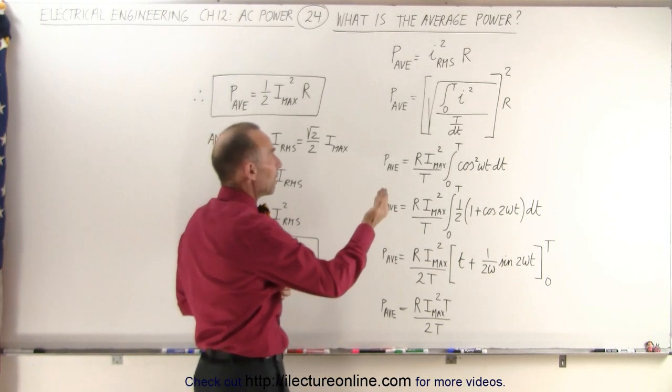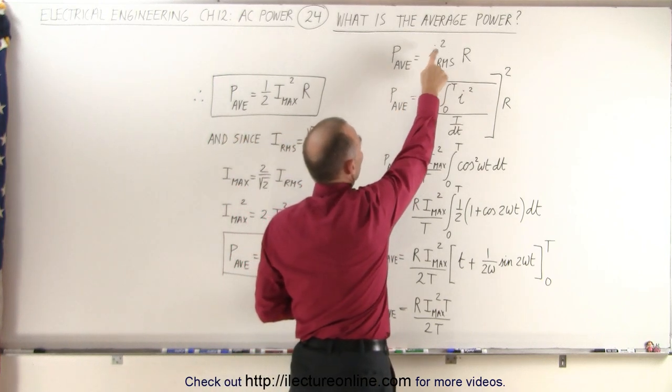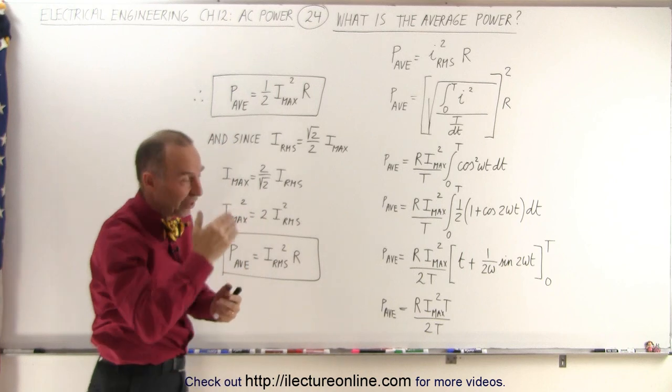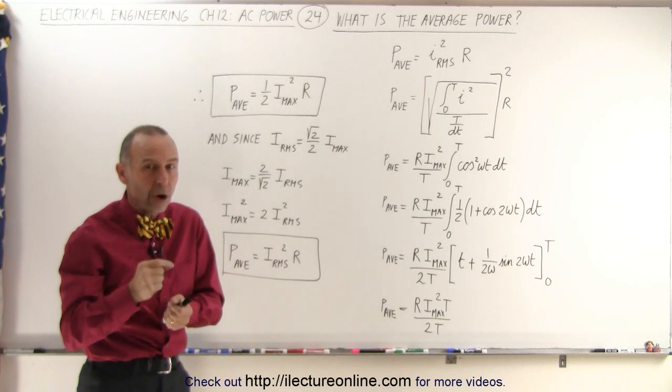By definition, the power consumed by a load resistor is equal to the current squared times R. In this case, if it's a sinusoidal current, we need to use the RMS, the root mean square current squared times R.